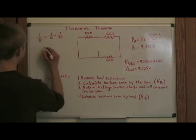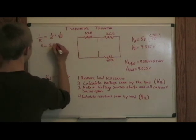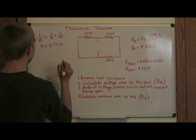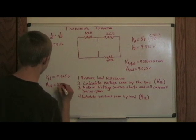This turns out to be R equals 8.75 ohms. So now we know that the Thevenin resistance is 8.75 ohms.